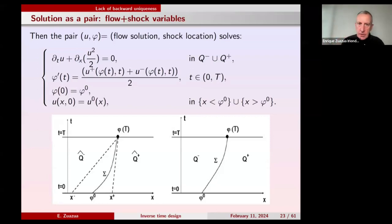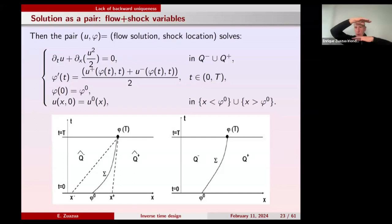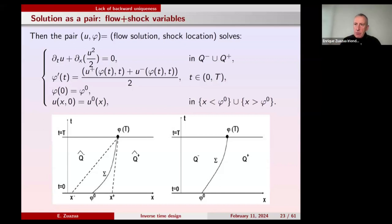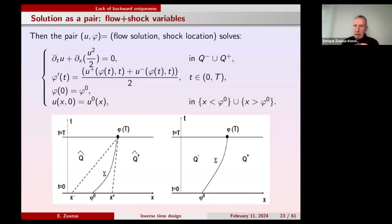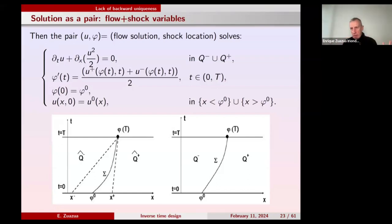Burgers' equation is also a contraction semigroup in L¹, preserves mass, and fulfills the comparison principle — positive initial data leads to positive solutions, and two initial data that are ordered will remain ordered for all time. This is one of the most beautiful nonlinear semigroups one can build. The theory of nonlinear semigroups was further developed by Crandall, Bénilan, and others, and we understand nowadays that the semigroup generated by Burgers' can be approximated in different ways.